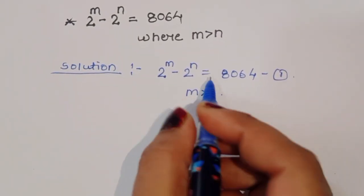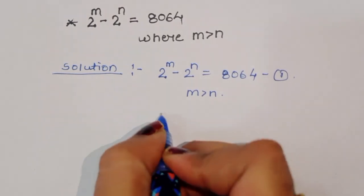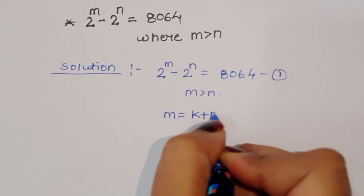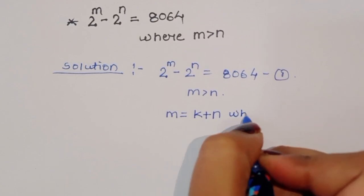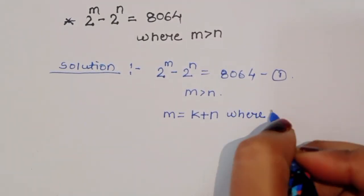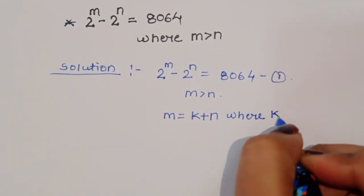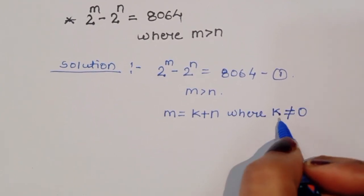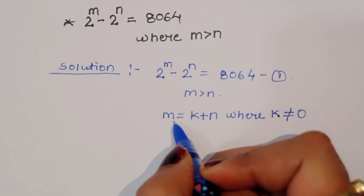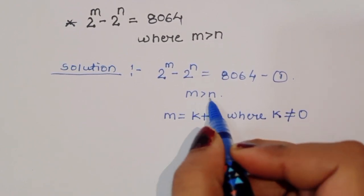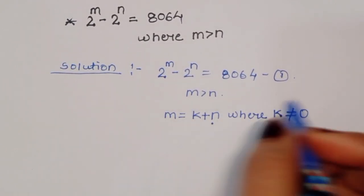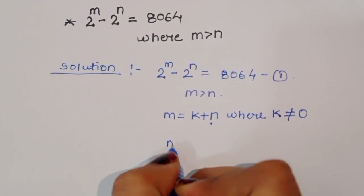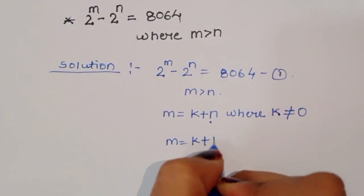Since m is greater than n, we can write m is equal to k plus n, where k is a constant and k is not equal to 0, because m is greater than n. This is equation number 2: m is equal to k plus n.